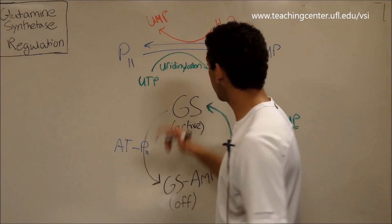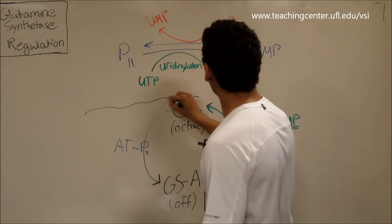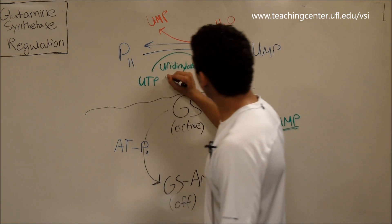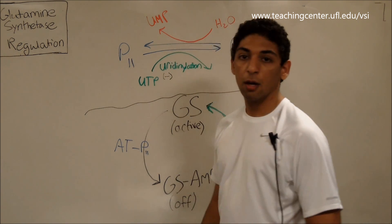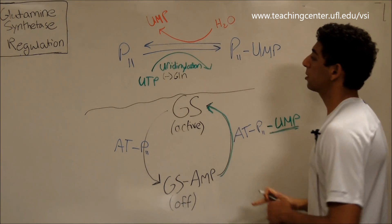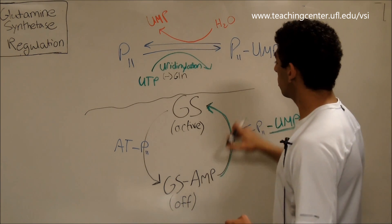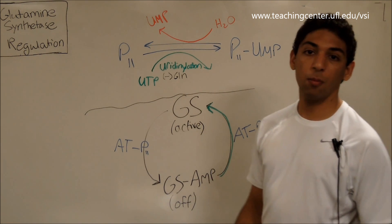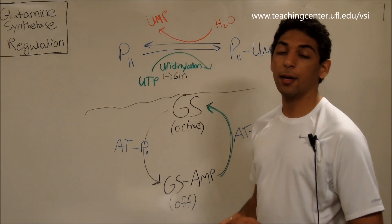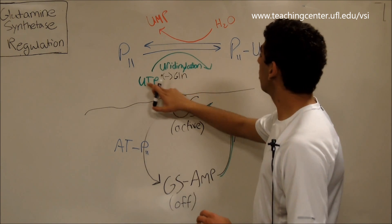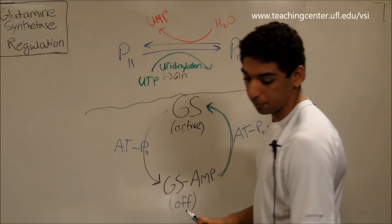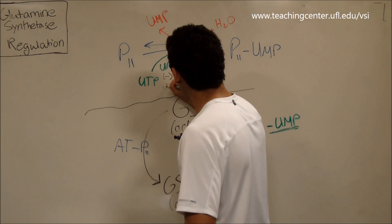So we've got some negative feedback here. So if, I'm going to draw a line so we don't get, my notes don't overlap. But if we've got a lot of glutamine, glutamine is going to inhibit this process because this process turns glutamine synthetase on, which would make more glutamine. And if we've already got a lot of glutamine, well, we don't need to be making any more. So we've got negative feedback where glutamine inhibits uridinalation. Now, alpha-ketoglutarate and ATP both activate it.